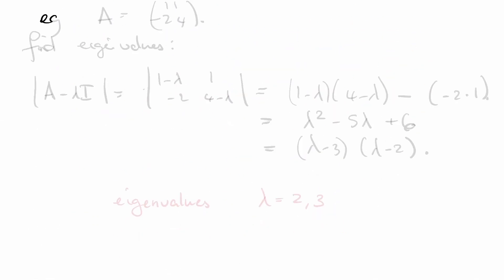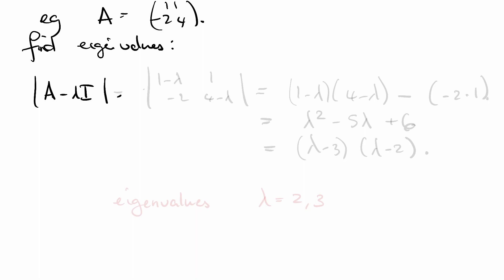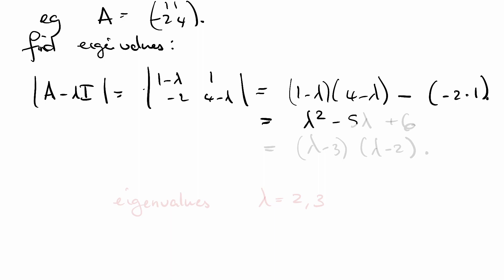Here's our A: [1, 1; -2, 4]. Let's find the eigenvalues. We're going to look at the determinant of A minus lambda I. This gives us [1 minus lambda, 1; -2, 4 minus lambda]. The determinant is (1 minus lambda)(4 minus lambda) minus (-2)(1), which simplifies to lambda squared minus 5 lambda plus 6, which factors as (lambda minus 3)(lambda minus 2). The eigenvalues are lambda equal to 2 and lambda equal to 3.